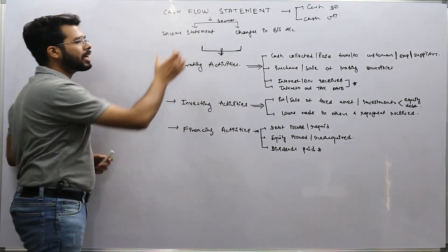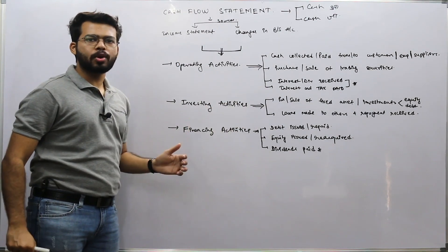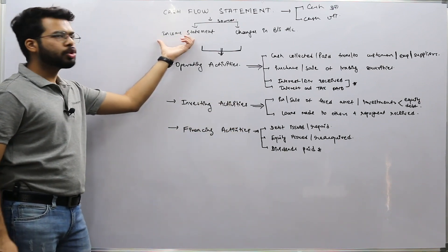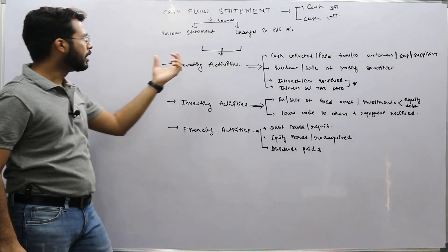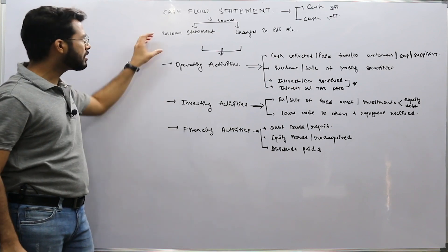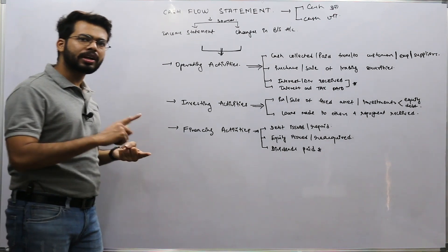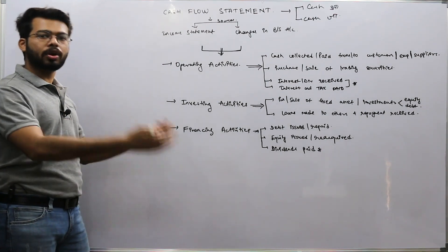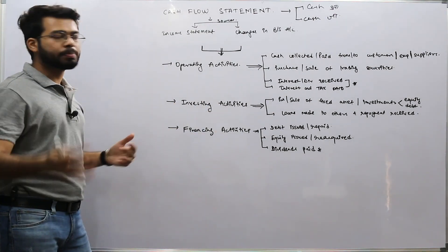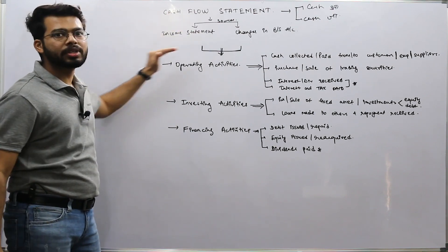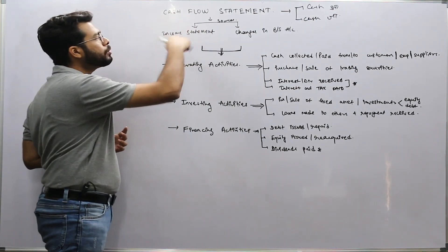In the income statement, you record many expenses and incomes — for example, you sold goods at a certain price. Whatever revenue is coming in, the cash portion of that comes into the cash flow statement. So whatever cash-related balances are there in the income statement — interest payment, dividend payment, interest received, purchases of raw materials, or goods sold — whatever expense or income occurred in cash, that will come to the cash flow statement.